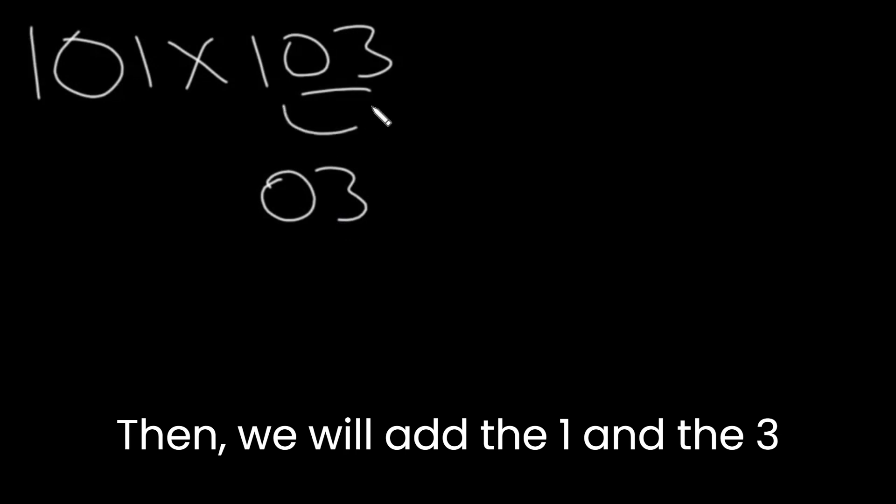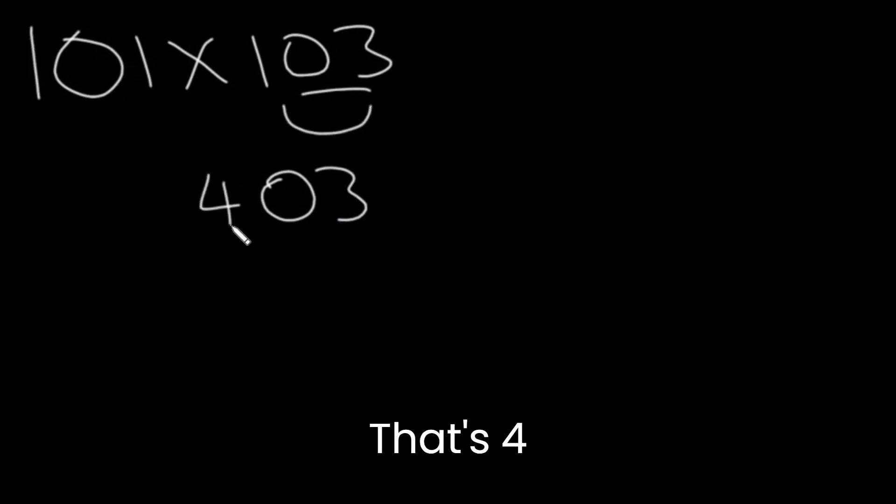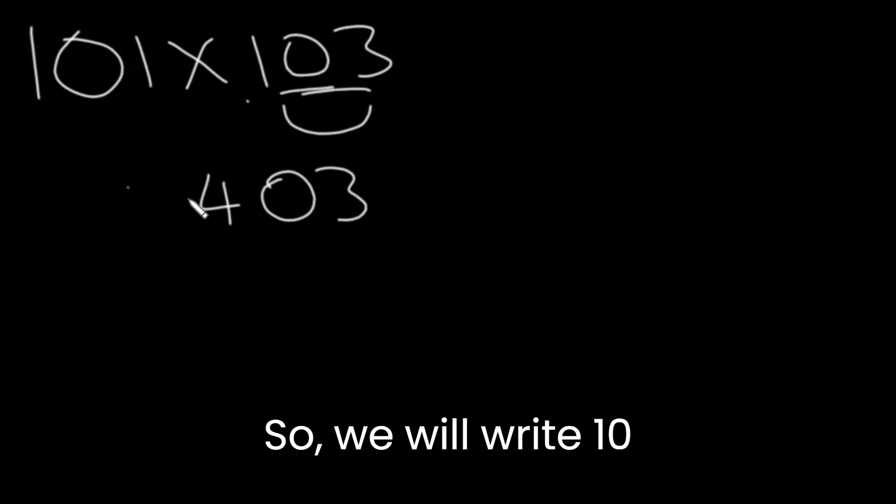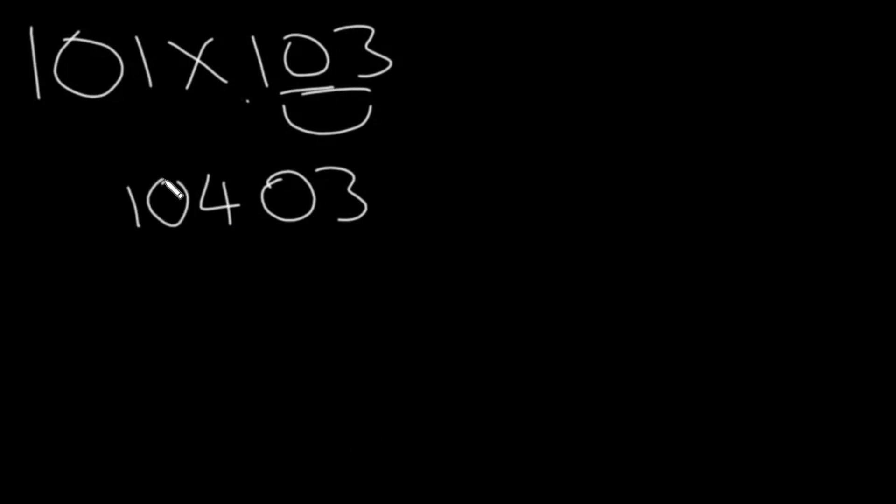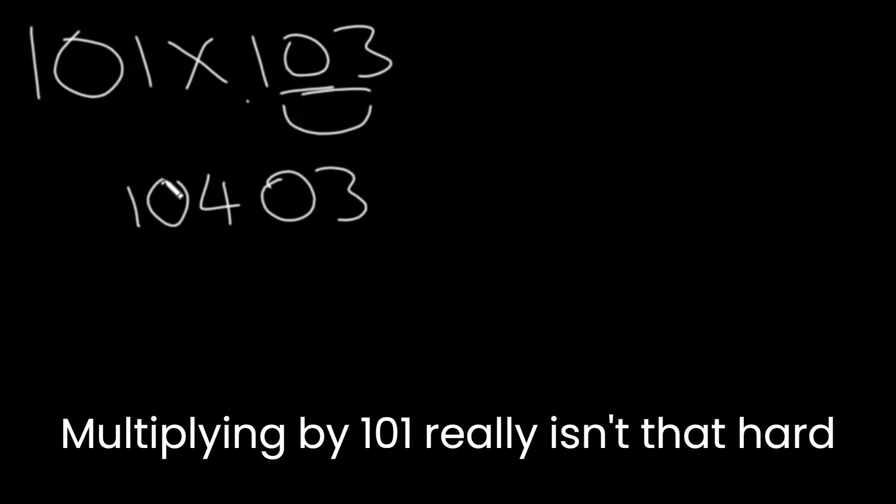Then we will add the 1 and the 3. That's 4. And then we will write these two digits. So this is our final answer. Multiplying by 101 really isn't that hard. Let's look at one more example.